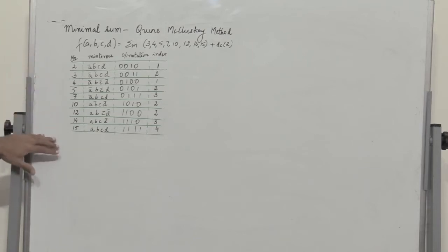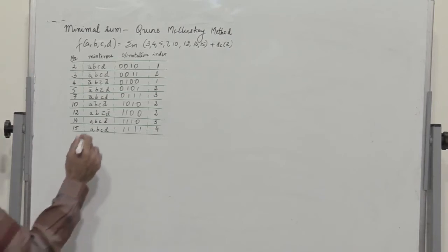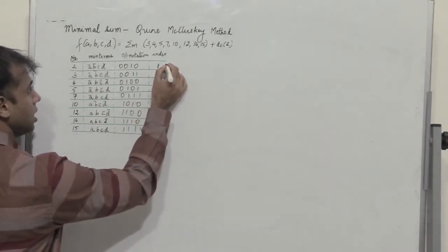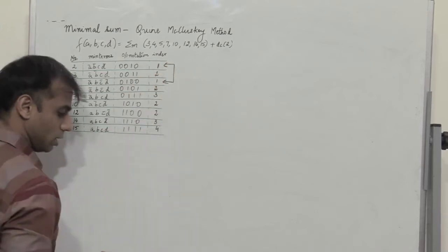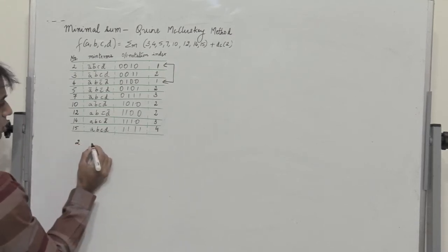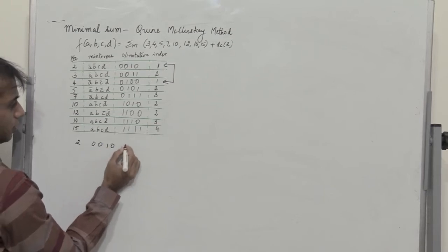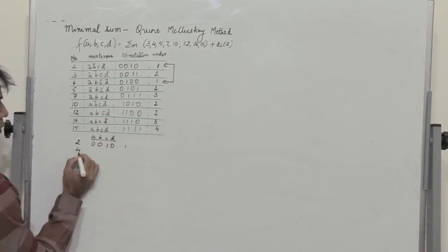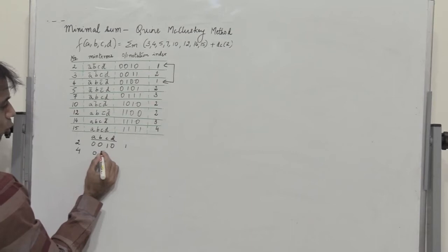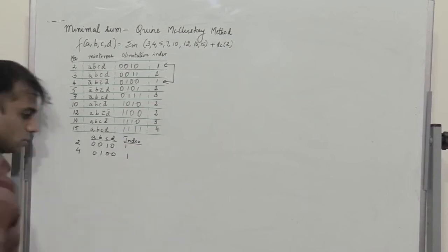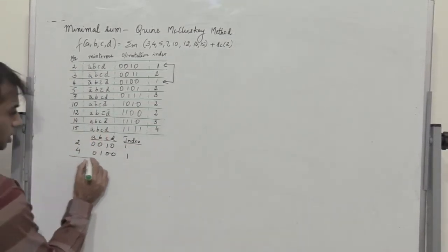After we write this table, what we do is group the minterms or combinations having the same index. So I write the combinations having the same index. Here I have two entries having an index of 1: the number 2 which corresponds to 0010 having index 1, with variables A, B, C, D; and then 4 having an index of 1, which is 0100.